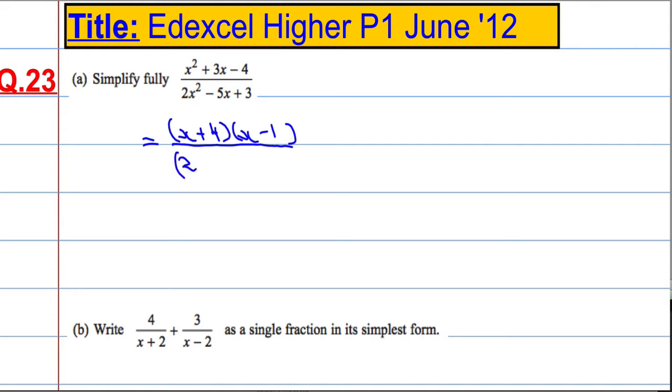And now let's factorize the bottom. So it's going to be 2x in one bracket and x in the other. And a little bit of thought. Two numbers that multiply to give me, okay, so we're going to need minus 3 here and minus 1 here.